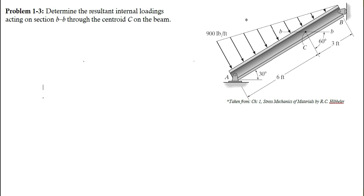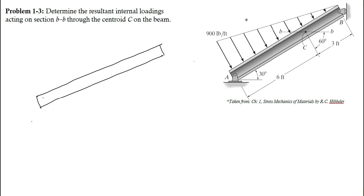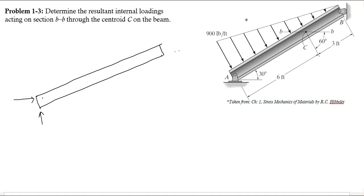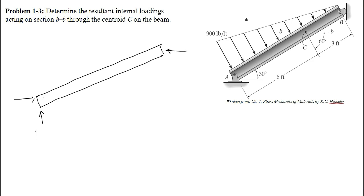To solve this problem, first we have to draw the free body diagram of this beam. At point A there is a hinge support, so hinge support will have two reactions: one in the vertical direction and one in the horizontal direction. At point B there is a rocker support, and rocker support will have only one horizontal reaction. We denote the reactions at A as R_AV in the vertical direction and R_AH in the horizontal direction, and the reaction at point B as R_B.